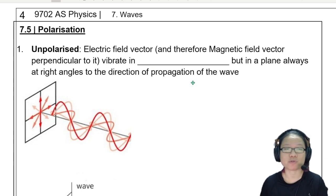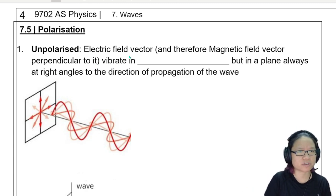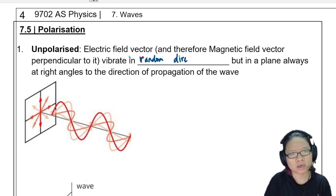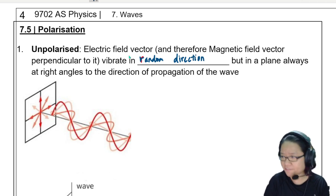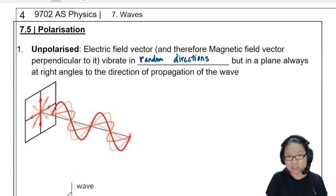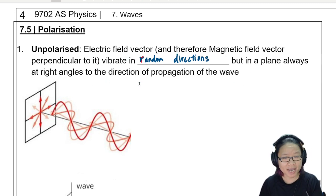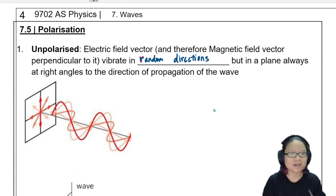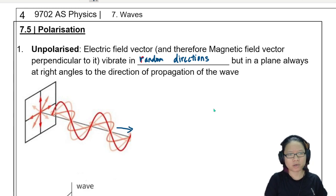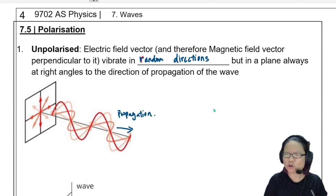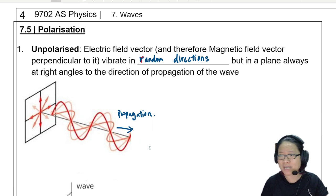We have the electric field vector represented by the arrows, and the magnetic field vector will always vibrate in random directions. Because this is a transverse wave, the random directions are always in a plane at right angles to the direction of propagation. So the wave travels and rotates as it spirals outward. Generally on paper, we're not going to draw this because it would confuse people, so sometimes we represent it with a symbol showing unpolarized wave with arrows in multiple directions.